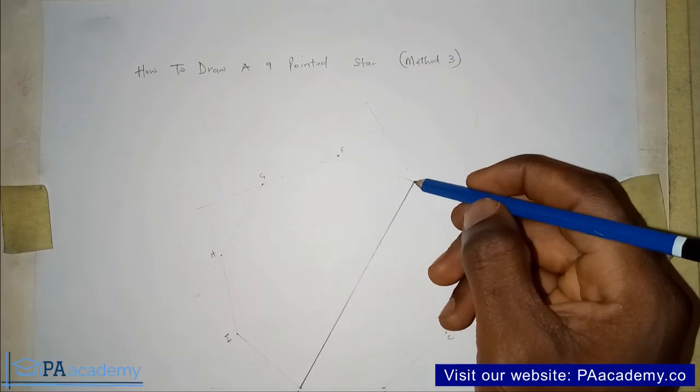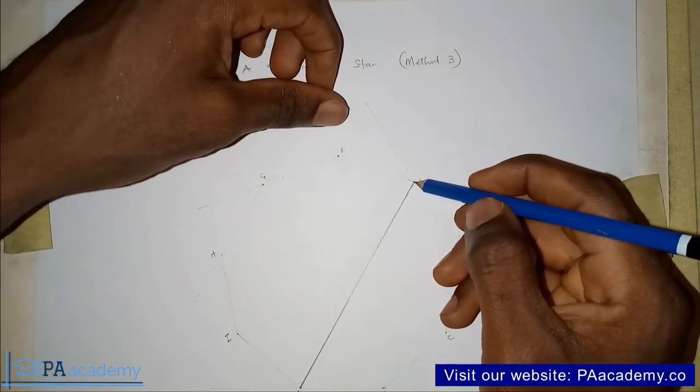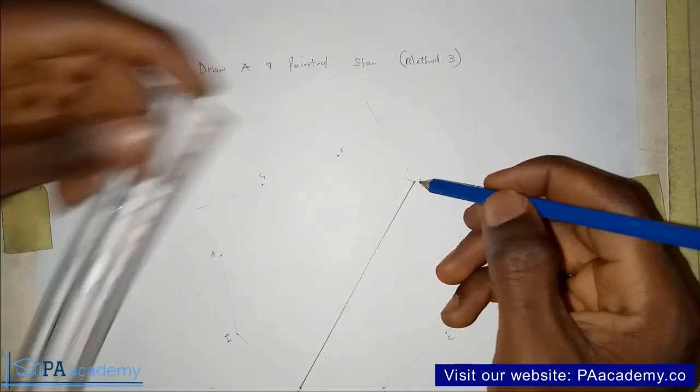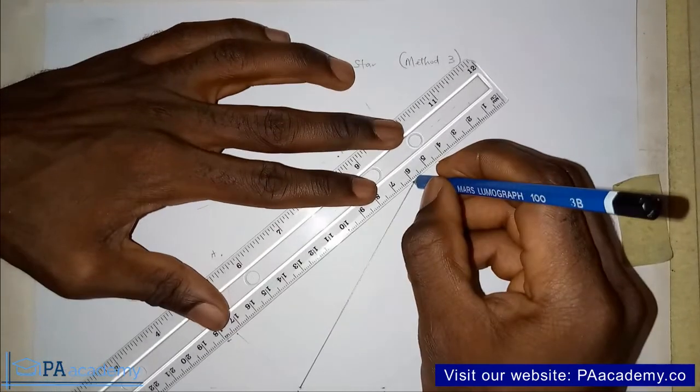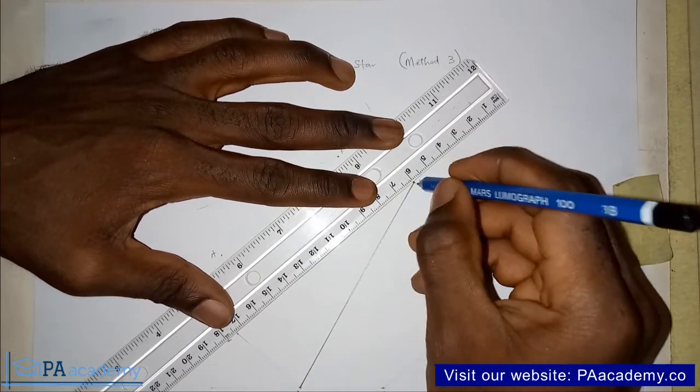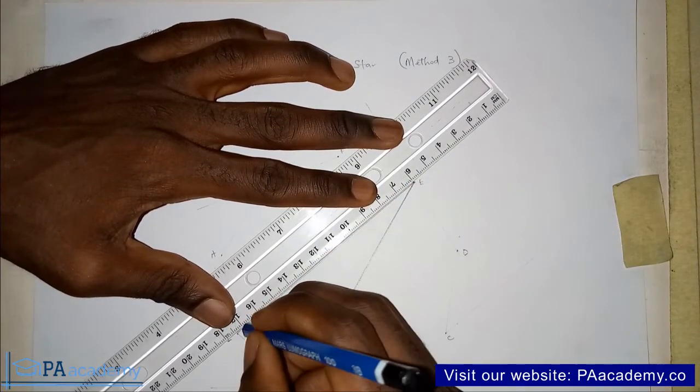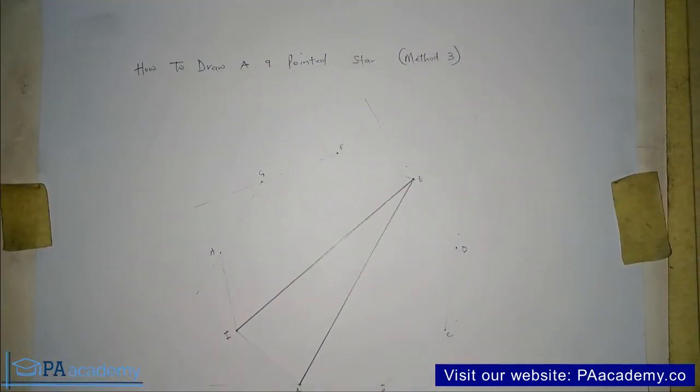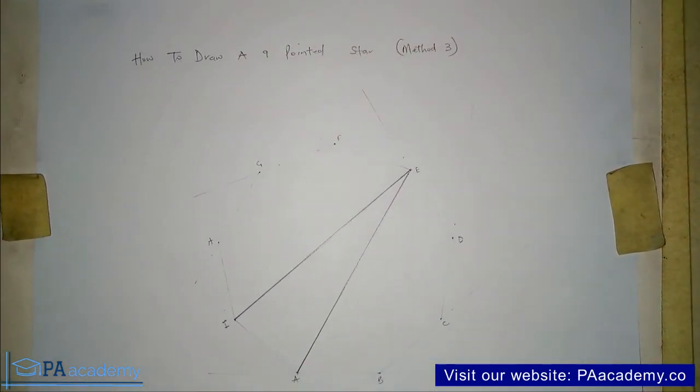The same thing. So from E, we are going to be skipping three other vertices. You are going to be skipping F, G, and H and draw a line straight to I. So from vertex E straight to vertex I.